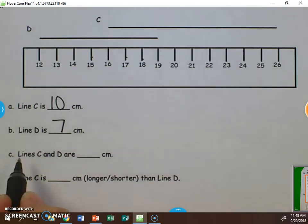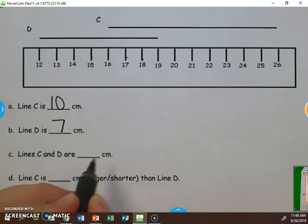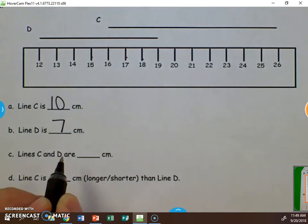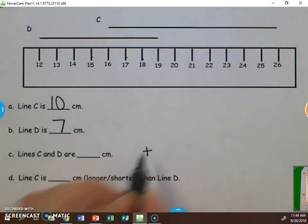Looking at C and D. Line C and D are blank centimeters long. Now, when we see that word and in there, that means they want us to add or combine the lengths.